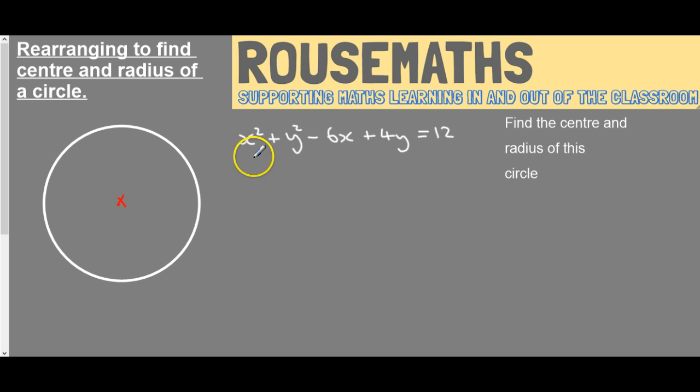So assuming you understand how to get the center and radius from the normal form of a circle equation, we're going to turn this one into that form. As you can see, we've got an x² and a y², indicating this is the equation of a circle.